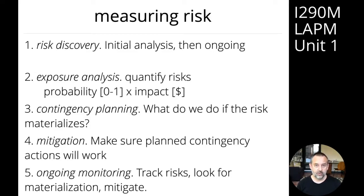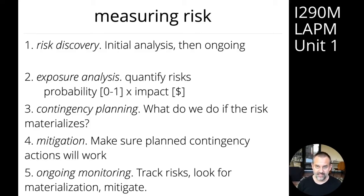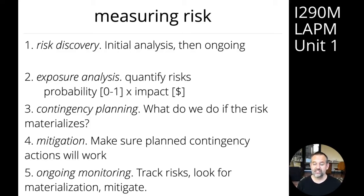Secondly, we're going to quantify those risks. There's a very simple formula: you take the probability of the risk materializing — between zero and one — and you take the impact of the risk in financial terms if the risk materializes, so how much it's going to cost if that thing actually happens. Then you multiply the probability by the impact and you've got a dollar value for the risk.